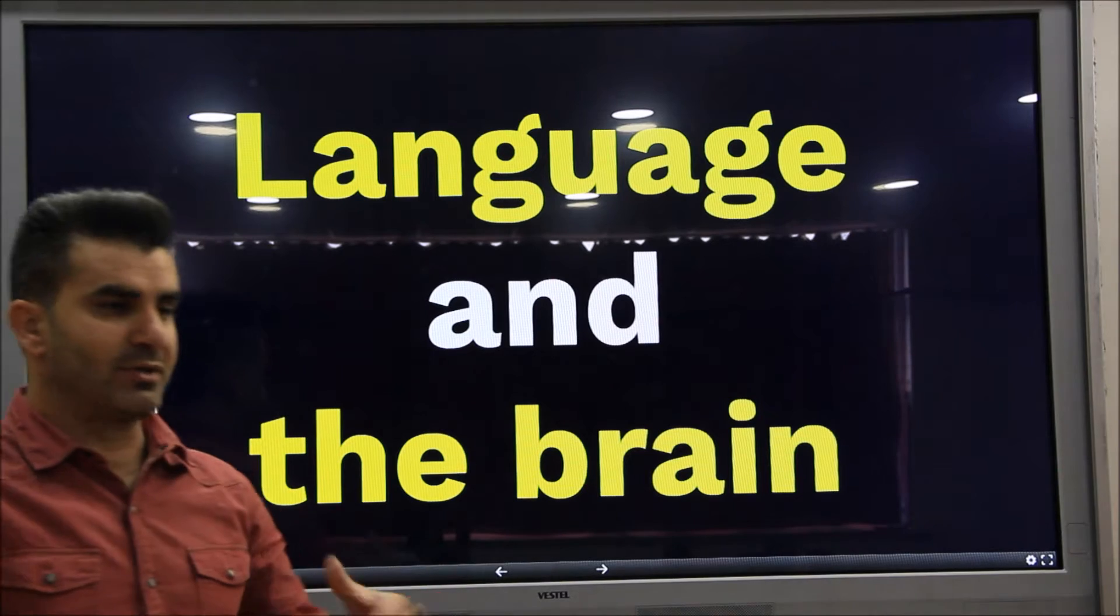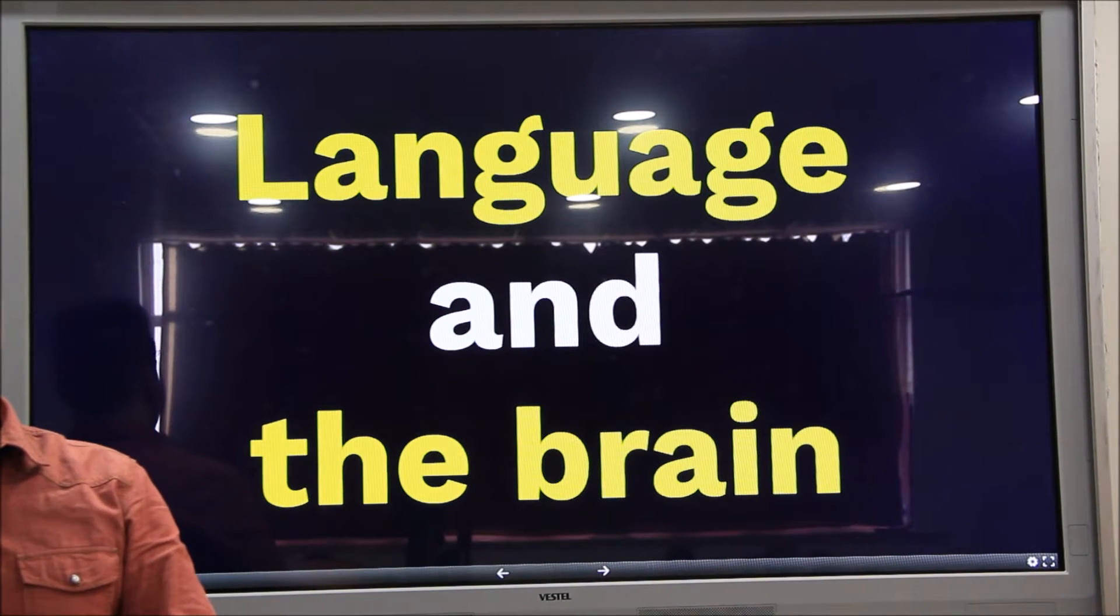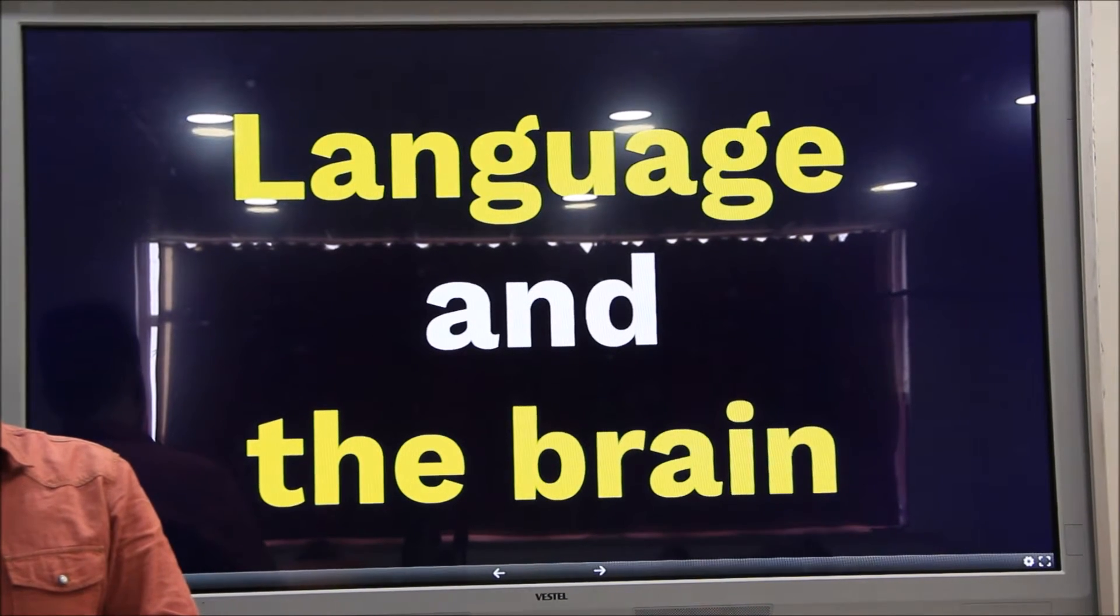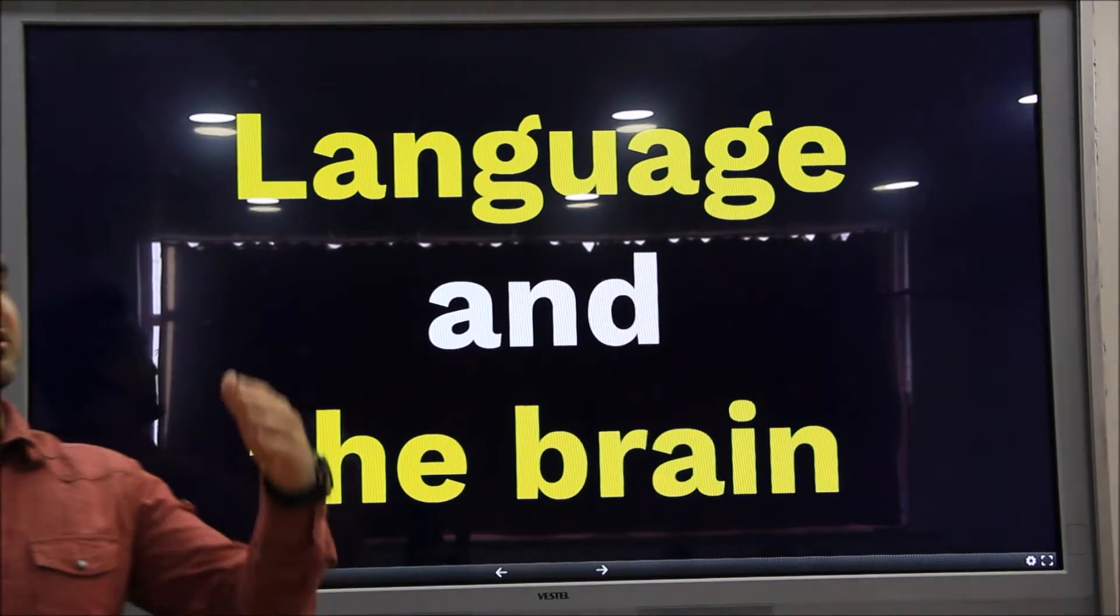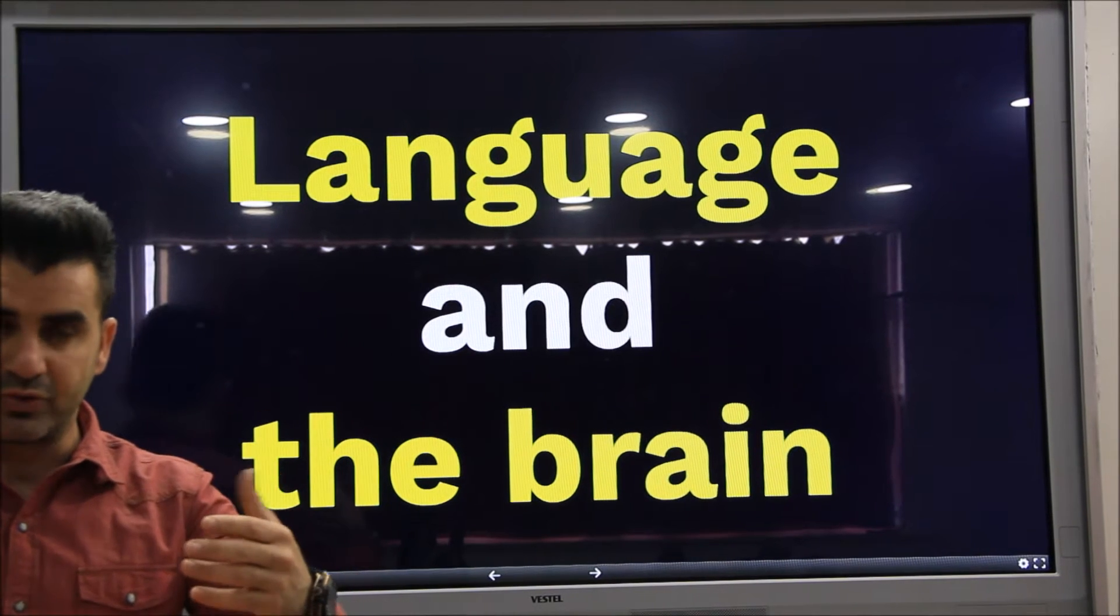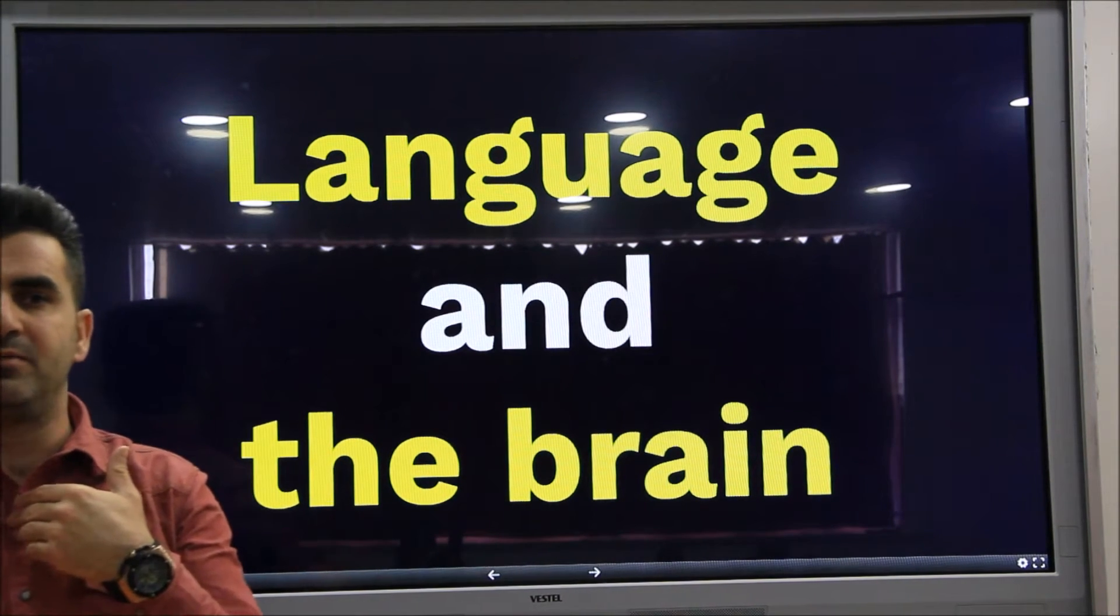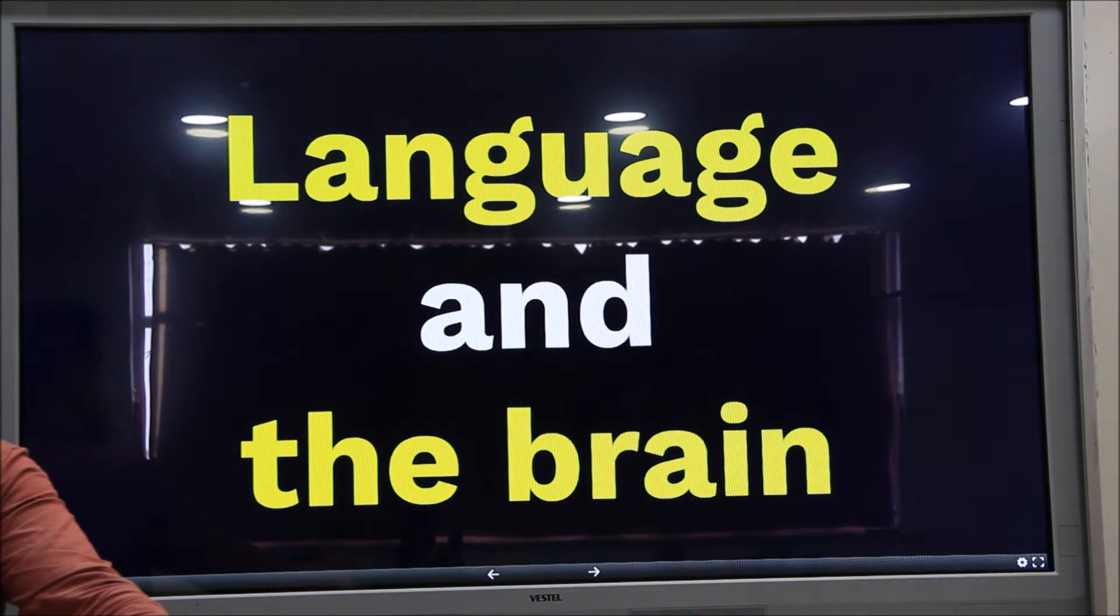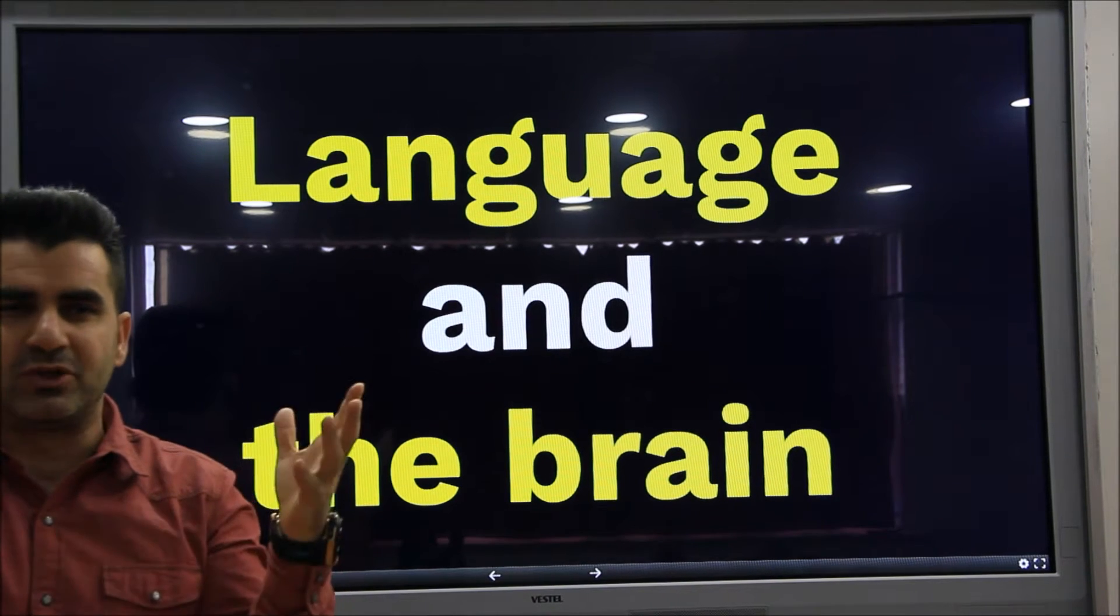Yani arkadaşlar, şimdi tamam, daha önce birinci dönemden itibaren dil şu şekilde üretilir, dil şu şekilde söylenir, biz dili şu şekilde anlarız, ondan sonra başkasının dediğini şu şekilde yorumlarız, biz ne anlıyoruz, hep bundan bahsettik. Yani tamam, dili biz üretiyoruz. Beynimiz dilin üretiminde büyük bir rol oynuyor. Peki bu üretim beyinde nasıl gerçekleşiyor?